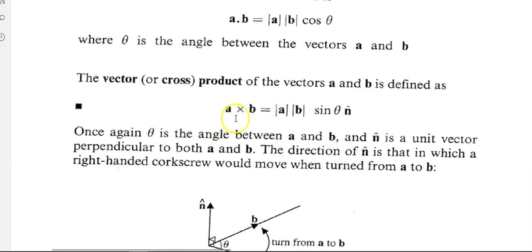So a cross b is equal to modulus of a, modulus of b, sin theta, where theta is the angle between a and b, and m is a unit vector which is perpendicular to both a and b.